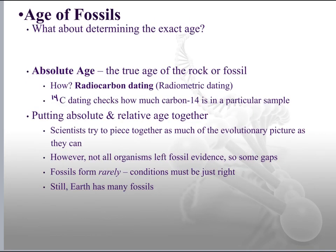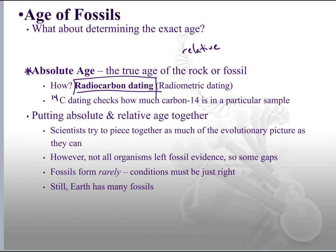What about determining the exact age of something? Before, all we could determine was relative age — whether something was older or younger than something else. The true age of a rock or fossil is called its absolute age. Back in the 1800s they couldn't do this, but nowadays we have radiocarbon dating, or carbon dating, using the isotope carbon-14. Carbon has six protons and eight neutrons for a total of 14. How much of that carbon-14 decays over time tells us just how old the fossil is.